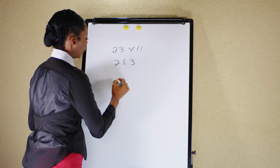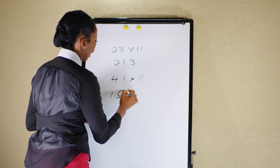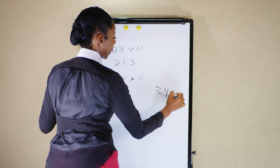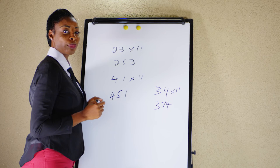Very quickly I can tell you the answer is two hundred fifty-three. And if I have to multiply let me say forty-one by eleven, very quickly I can tell you the answer is four fifty-one. Now if I have to multiply thirty-four by eleven, very quickly I can tell you the answer is three hundred seventy-four.